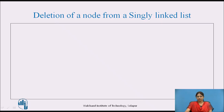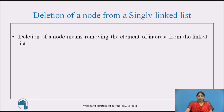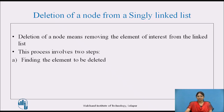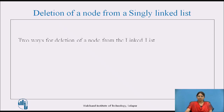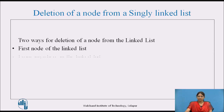Deletion of a node means removing the element of interest from the linked list. This process involves two steps: first, finding the element to be deleted, and then deletion of the node with pointer adjustment. There are two ways for deletion — from the first node of the linked list, and from anywhere in the linked list.